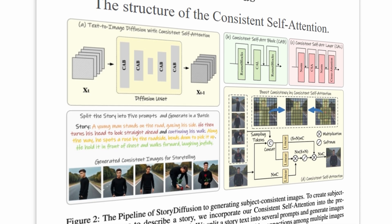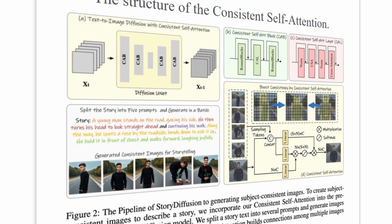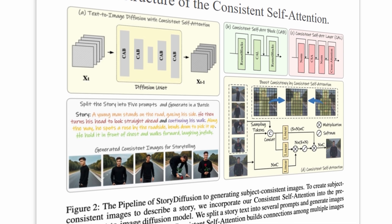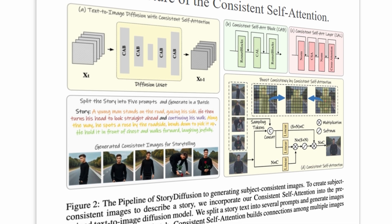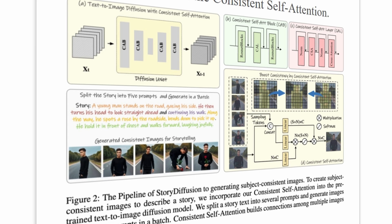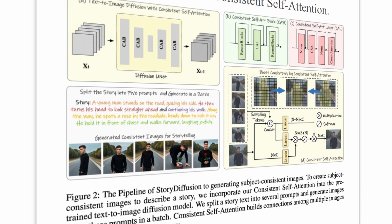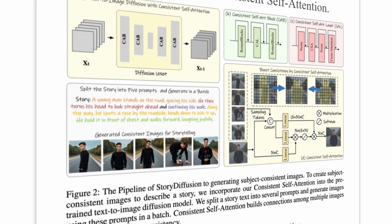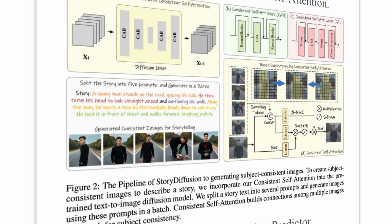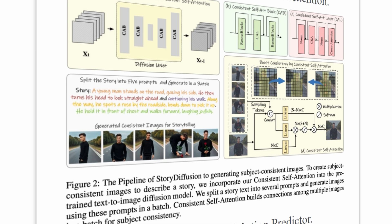Story Diffusion also leverages story splitting, where it breaks down a story into multiple text prompts, each describing a part of the narrative. These prompts are then processed simultaneously to generate a sequence of images depicting the story.